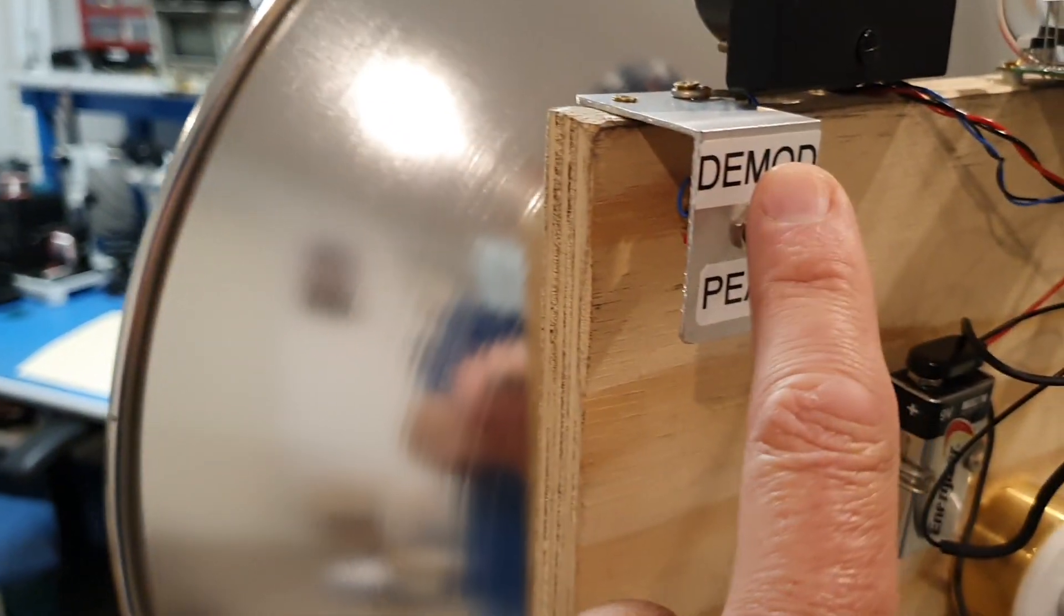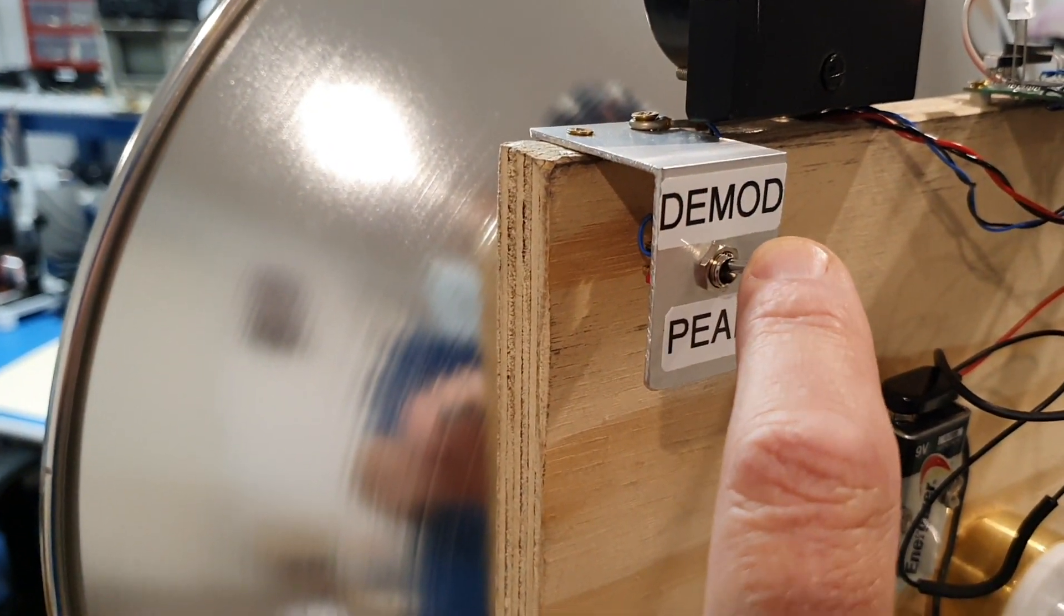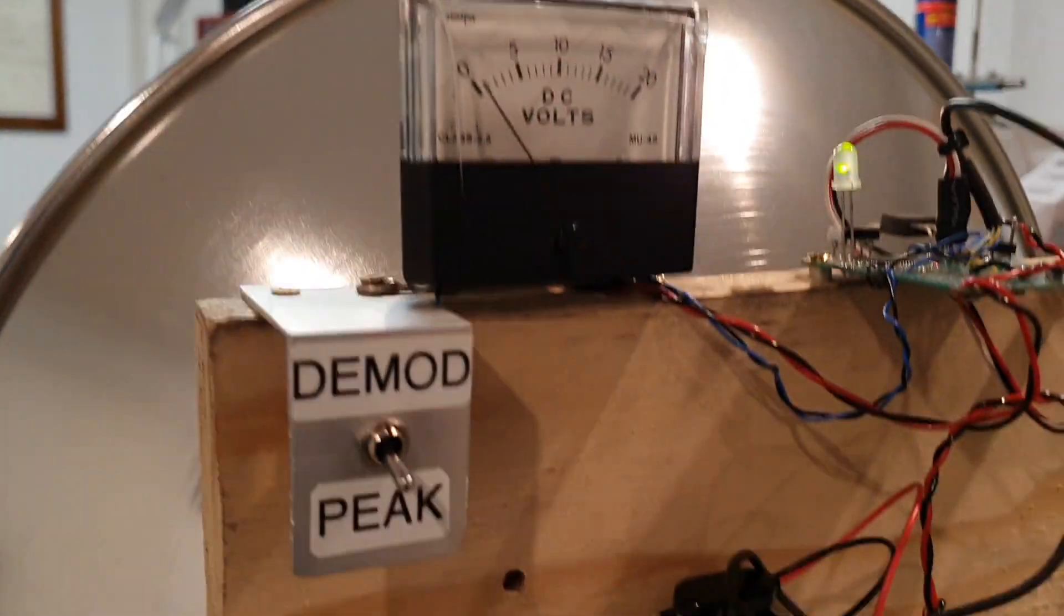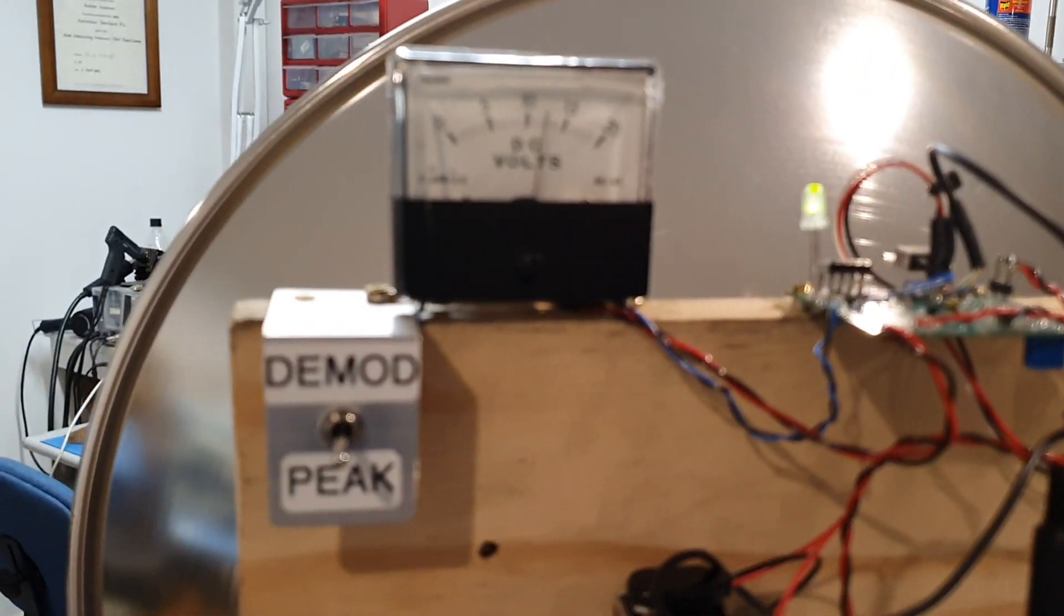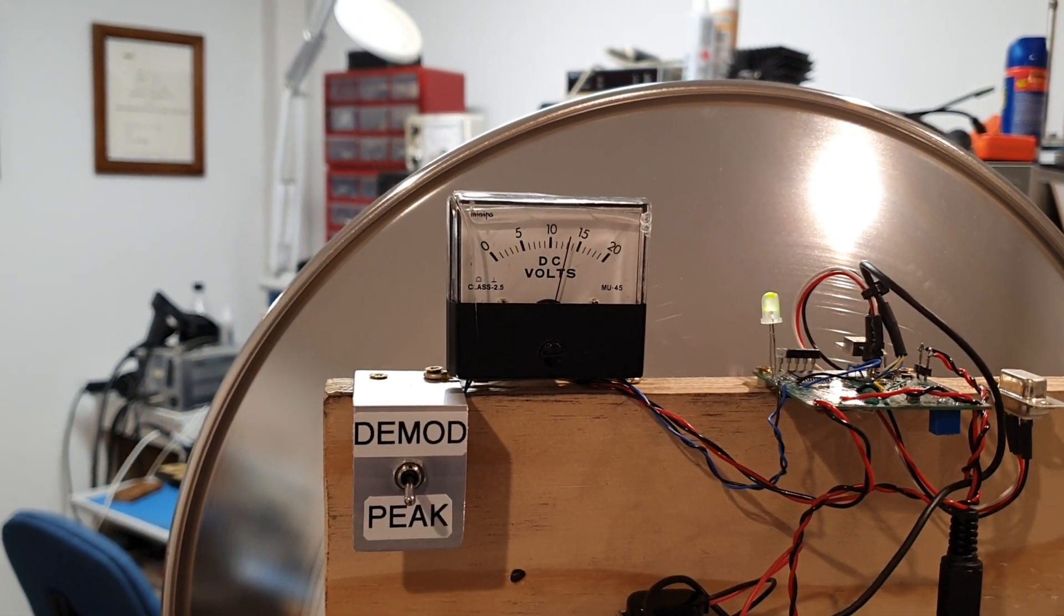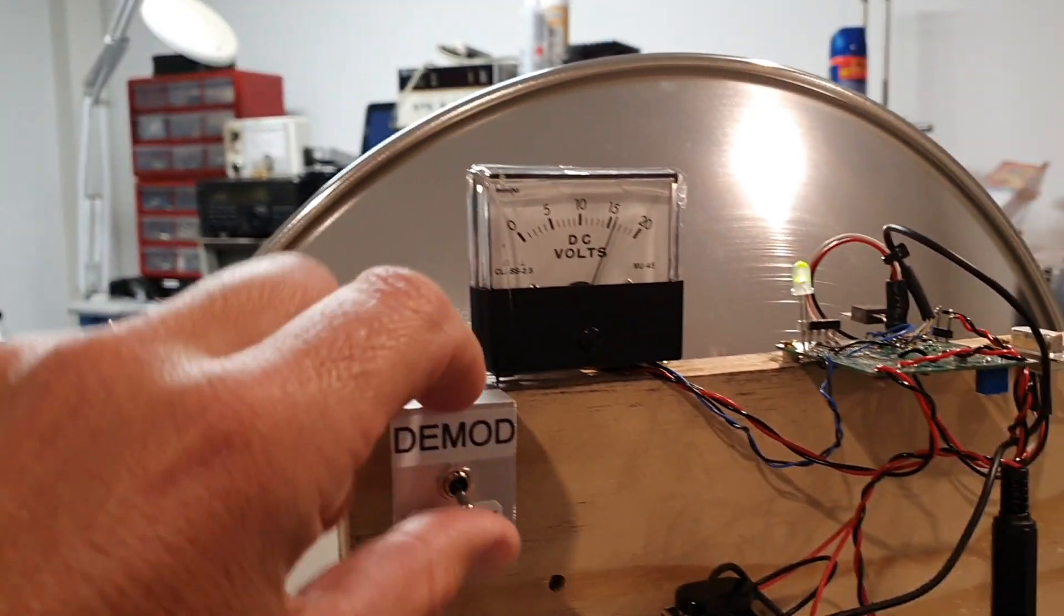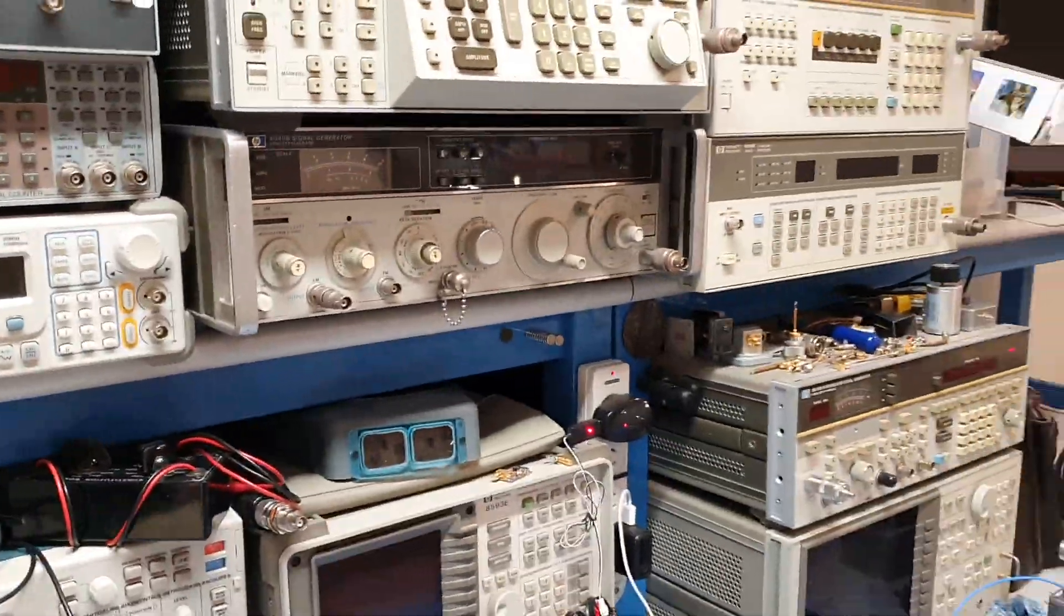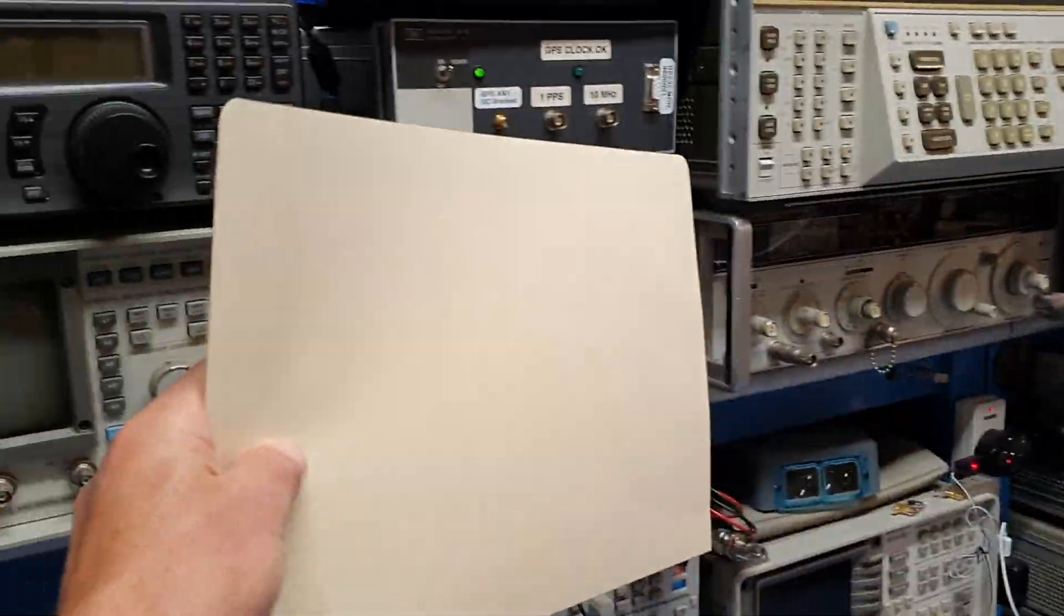So we'll just go back and demonstrate how we can receive signals from that particular source. We'll leave our unit in demod mode, actually no we won't, we'll switch it on, we'll put it in peaking mode and we will peak up on that signal which is there, put it into demod mode, and now we're going to modulate our transmitter.